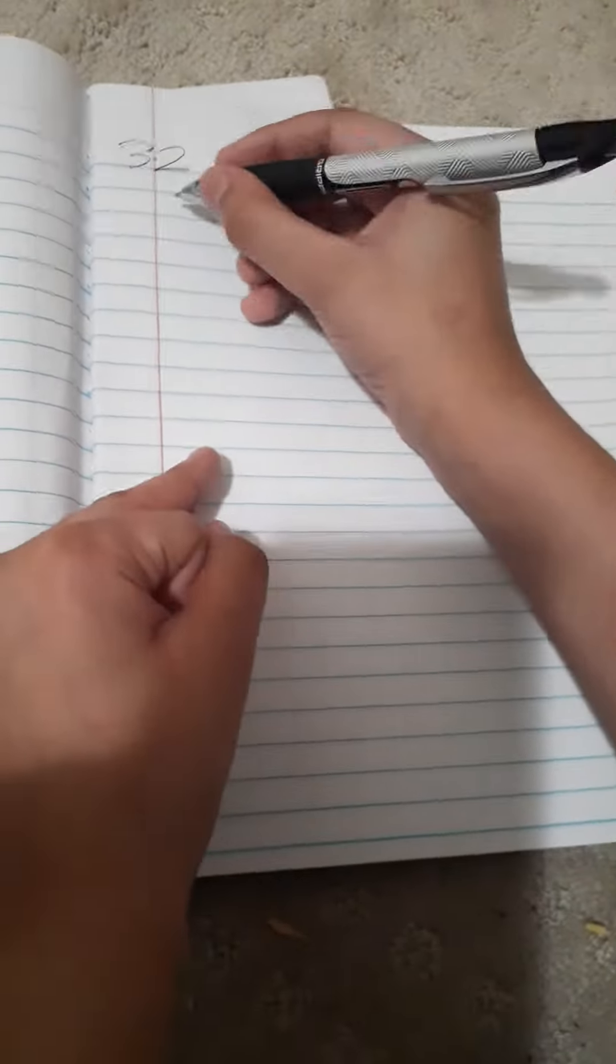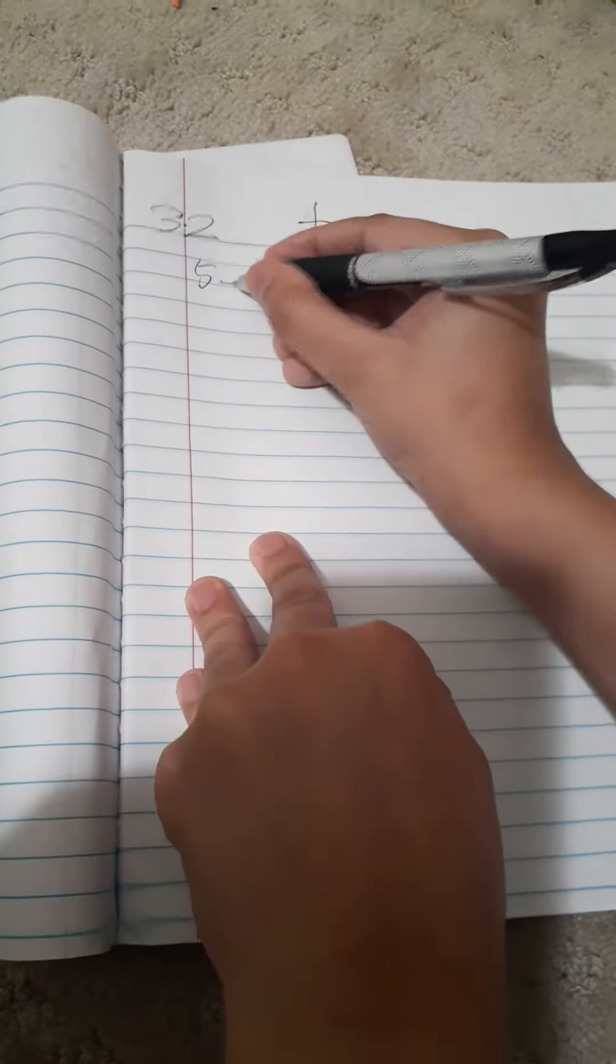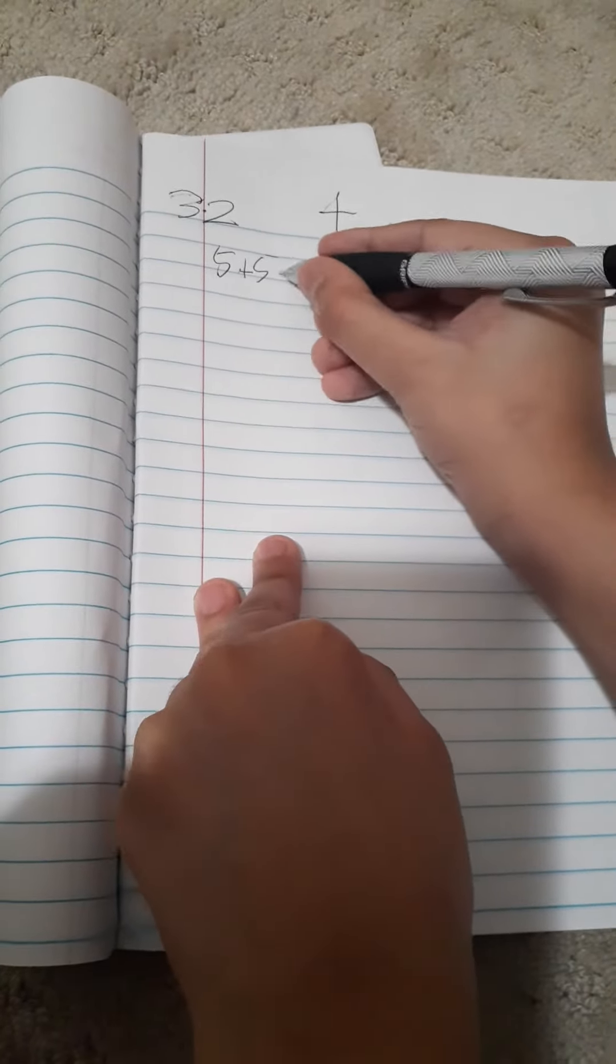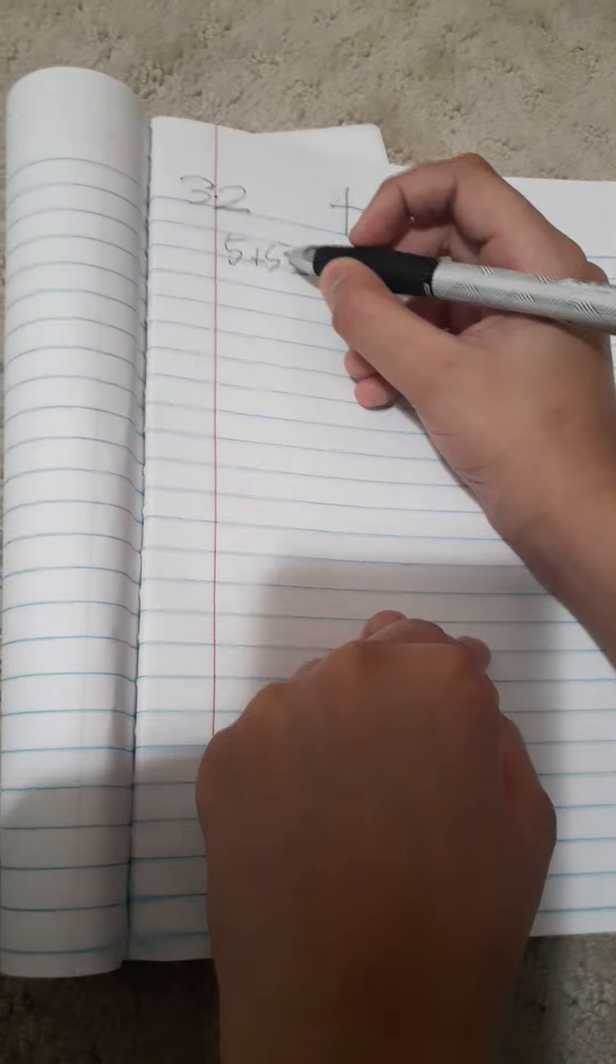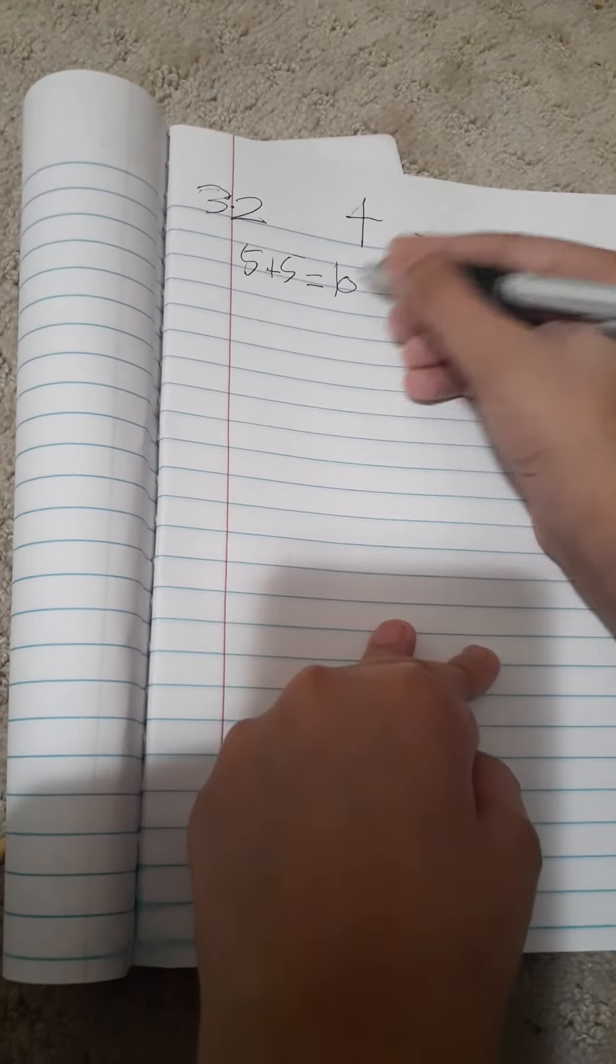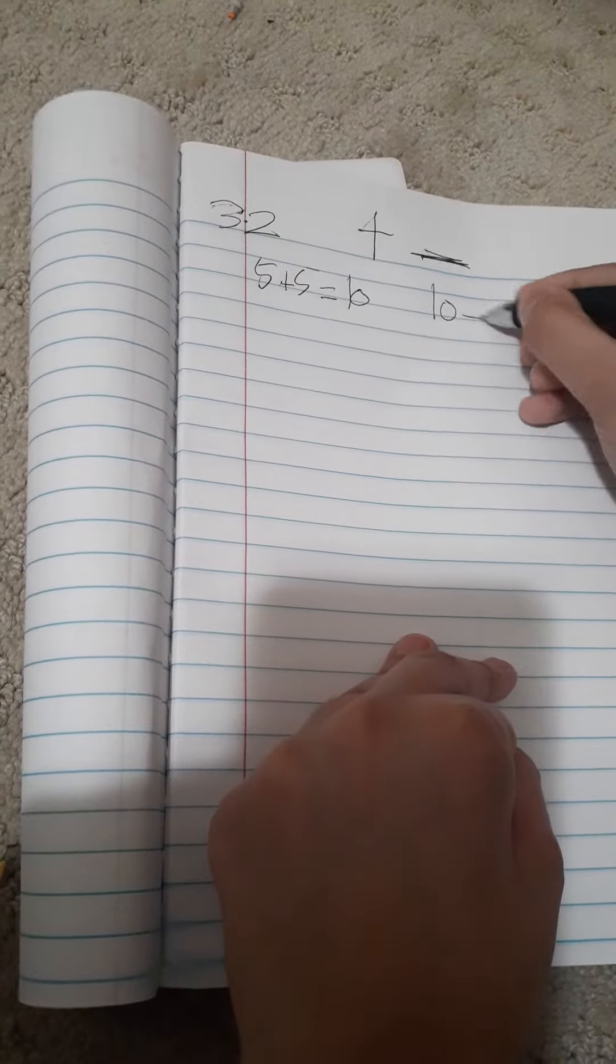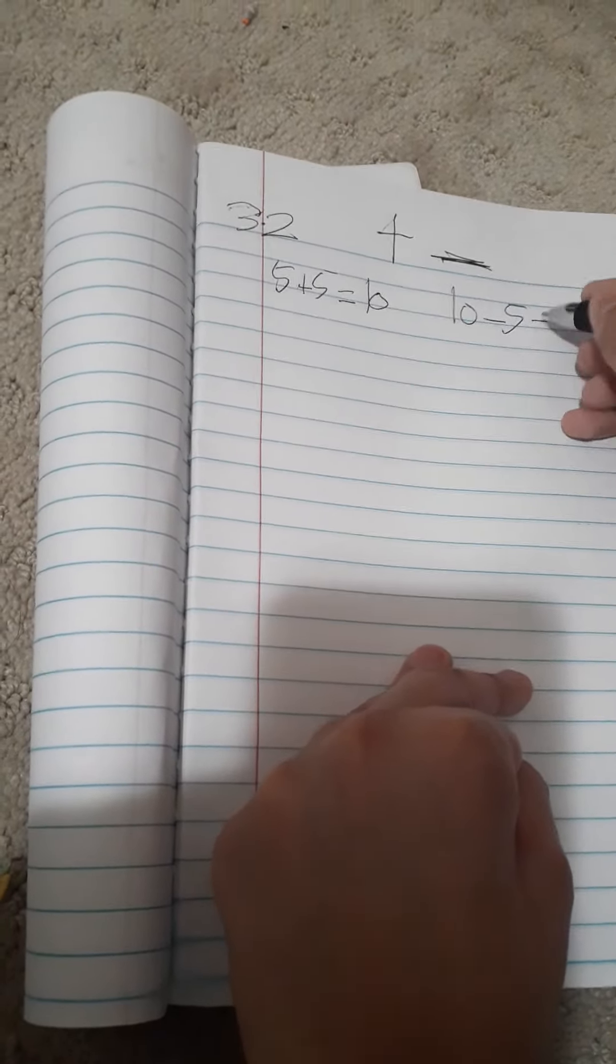Hey guys, we're doing addition and subtraction 3.2. Question one: 5 plus 5 equals 10. Now we need to make subtraction: 10 minus 5 equals 5. Now the next question.